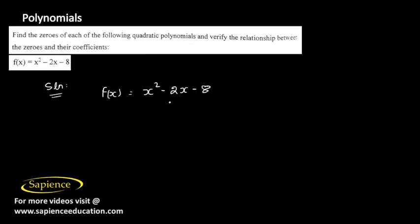We need to factorize this polynomial using the middle term splitting technique. We need to split the middle term, -2x, in such a way that we get two numbers which when multiplied give the product of the constant and the coefficient of x², which in this case is -8.